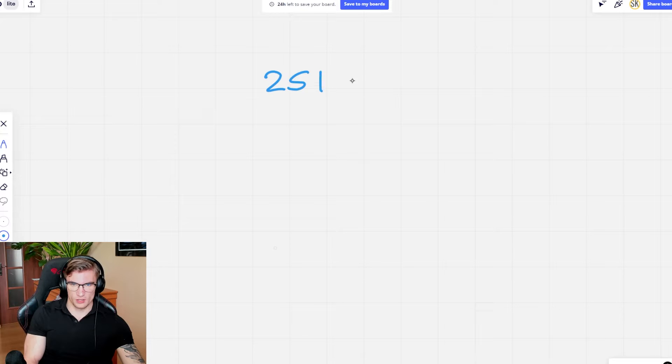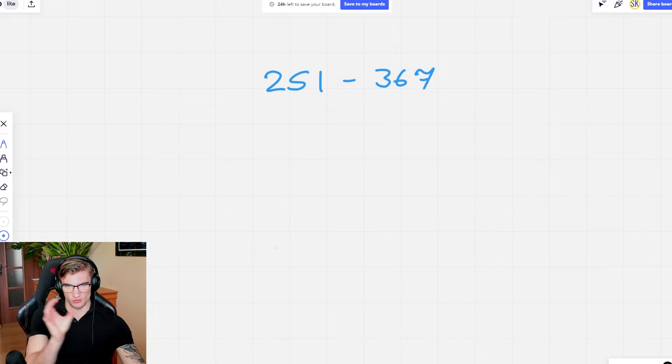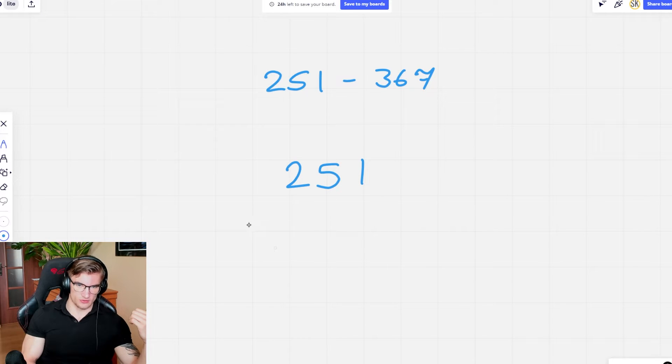So let's do 251 minus 369. Obviously the answer is going to be negative because I'm taking a way bigger number from a smaller number, right? So let me just show you that this is not going to work with the method I showed you last time if I do it like that.